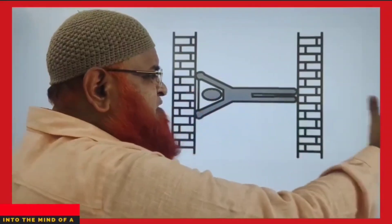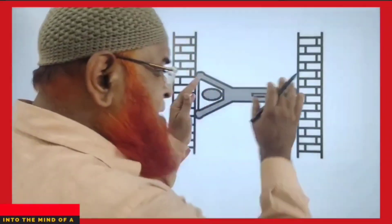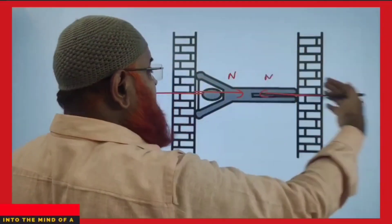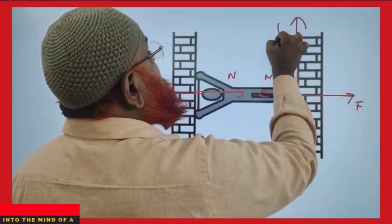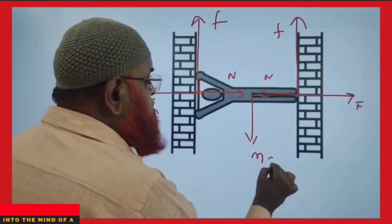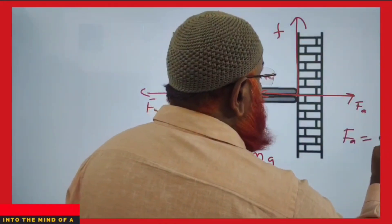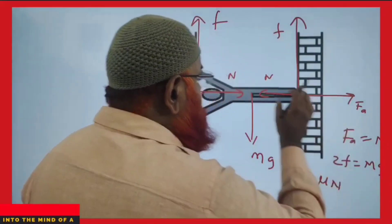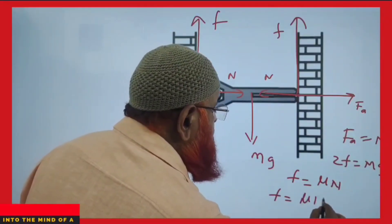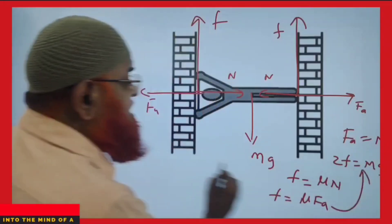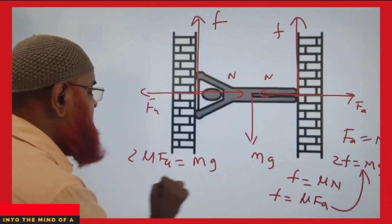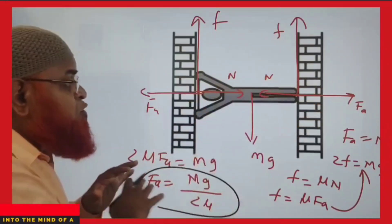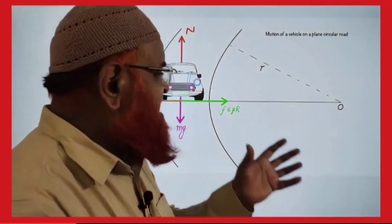A man holds himself between two walls by pressing his legs and hands. He applies force horizontally; normal reaction acts opposite. Friction acts upward on both walls balancing mg: 2f = mg. Since f = μN and N equals applied force, substituting: 2μ×F = mg. Therefore the applied force F = mg/(2μ).